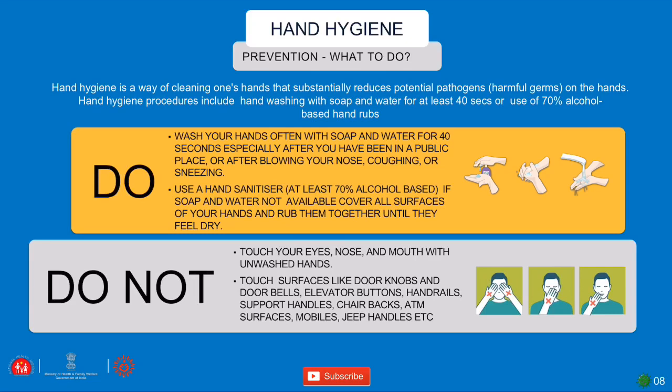Hand hygiene is a way of cleaning one's hands that substantially reduces potential pathogens on the hands. Hand washing can be done with soap and water for at least 40 seconds, or with a 70% alcohol-based hand rub. When buying any sanitizer, make sure alcohol is the base ingredient.